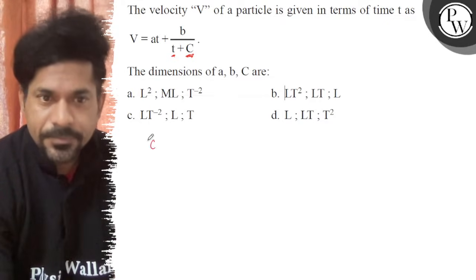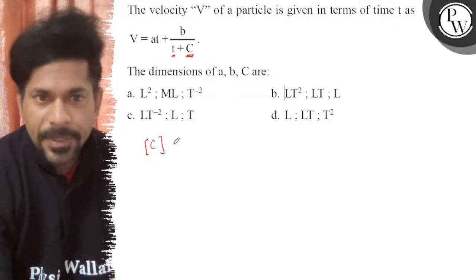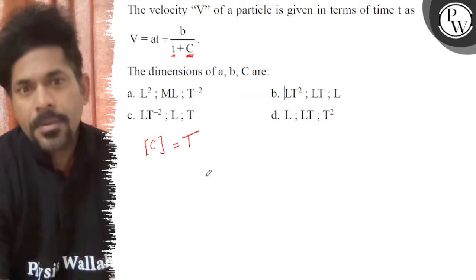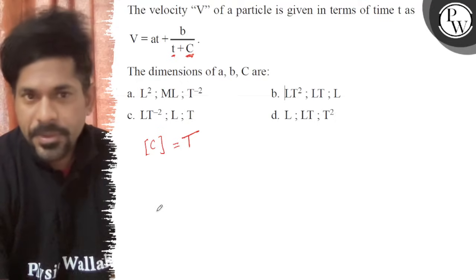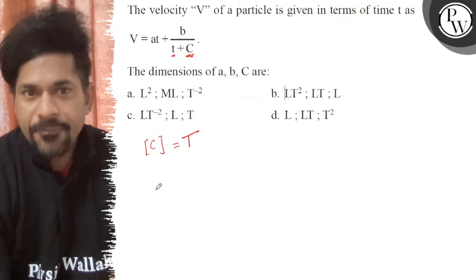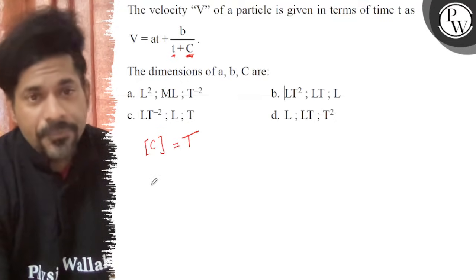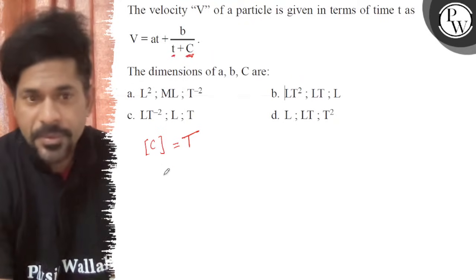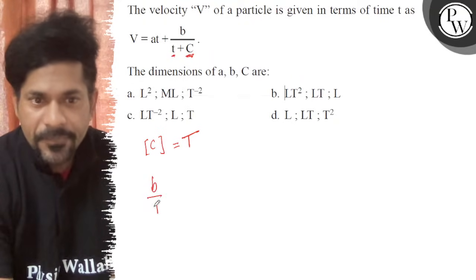That means c has a dimension equivalent to time. That's the first one. The second one is the dimension of b. Now carefully see, time plus time will be time, so b divided by time...